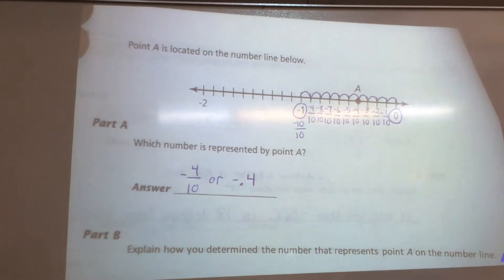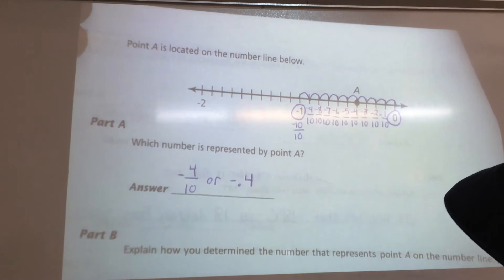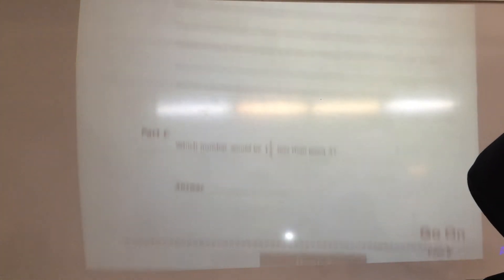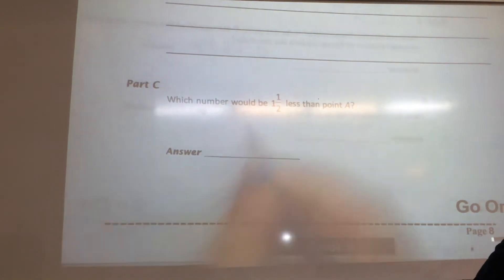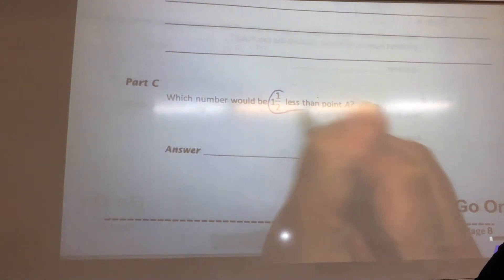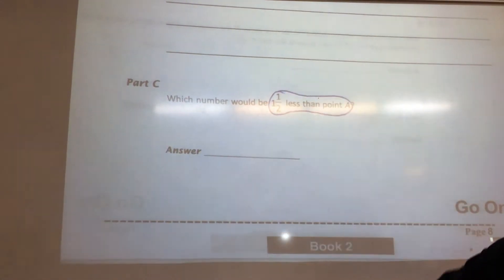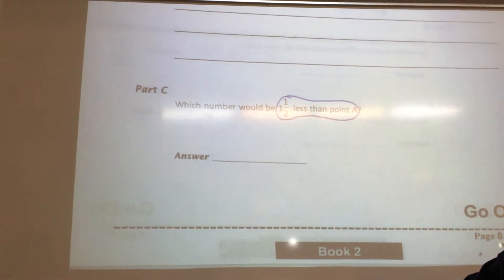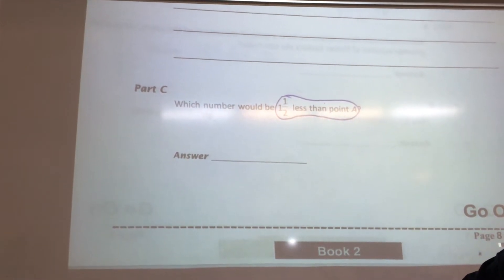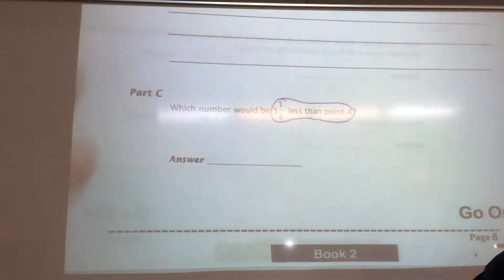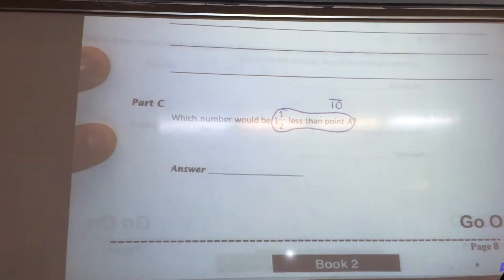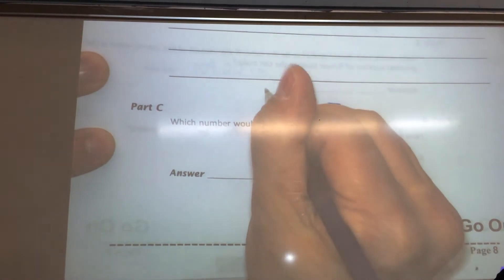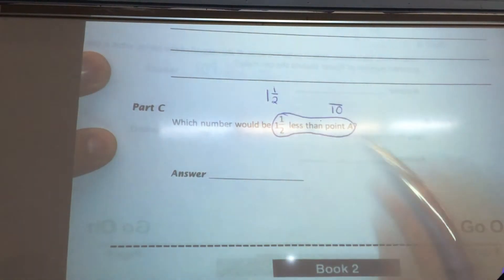That's important because we are now moving down to part C. And part C says, what number would be one and a half less than point A? And if you remember what I just said, in the number line, the denominator was 10. So I need to make one and a half out of 10.